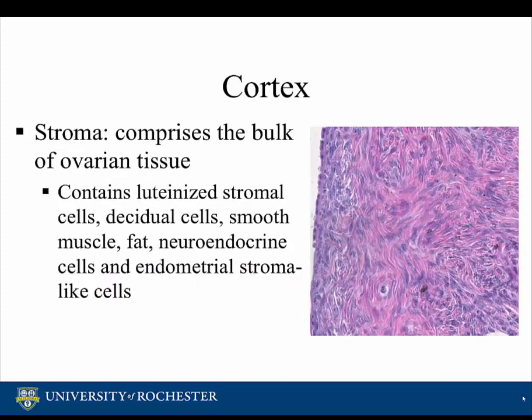The cortex of the ovary consists of a stroma. The stroma comprises the bulk of ovarian tissue. It contains luteinized stromal cells, decidual cells, smooth muscle, fat, neuroendocrine cells, and endometrial stroma-like cells.